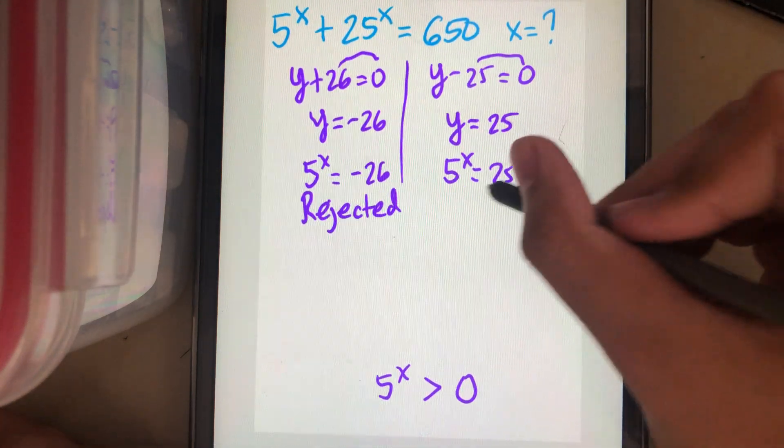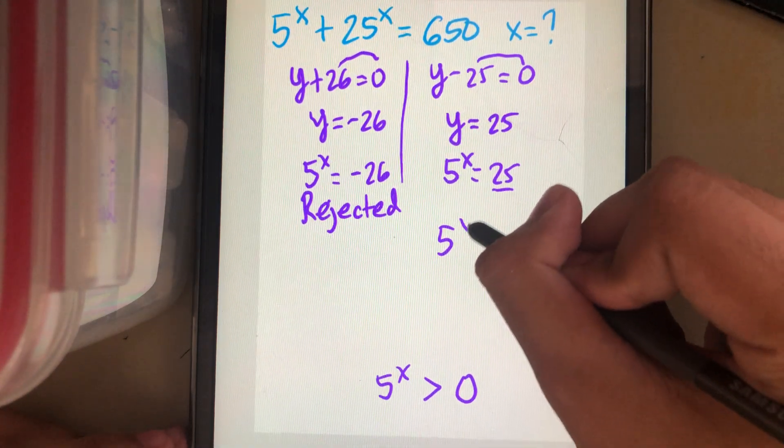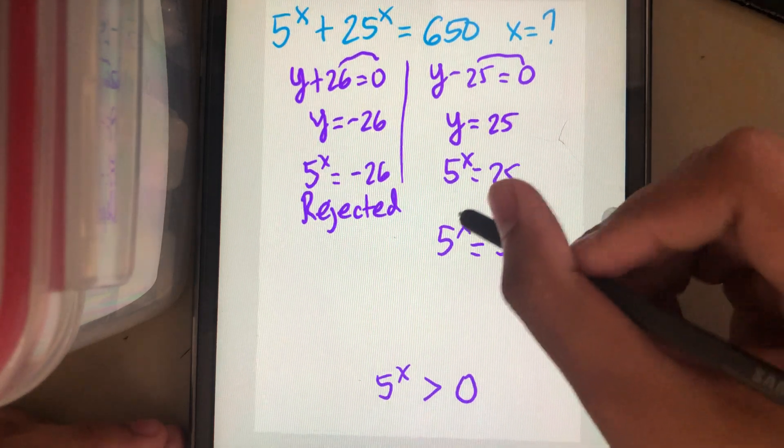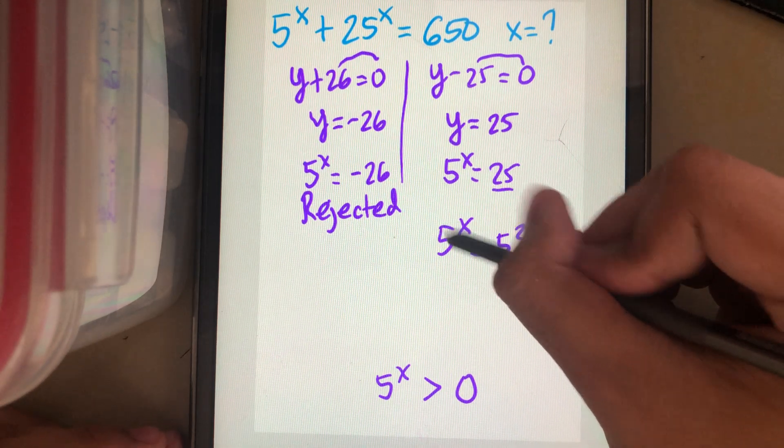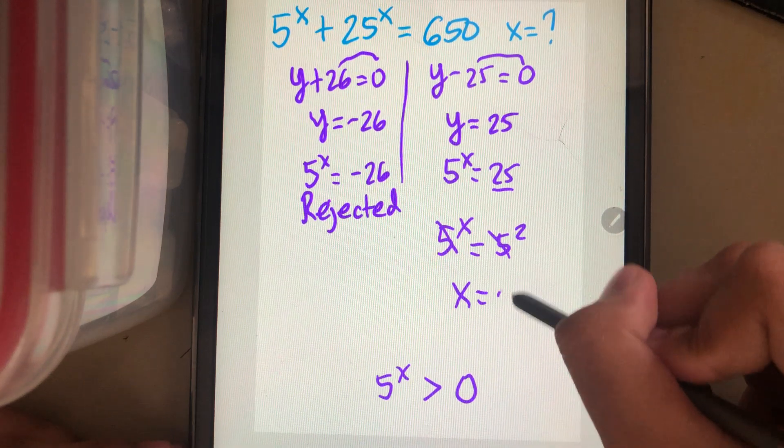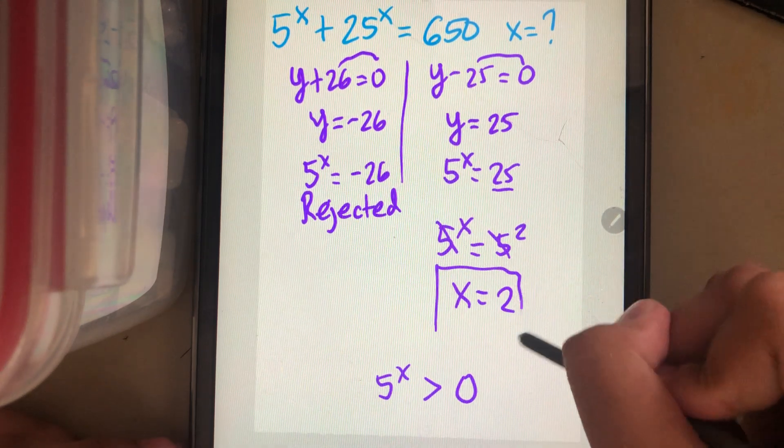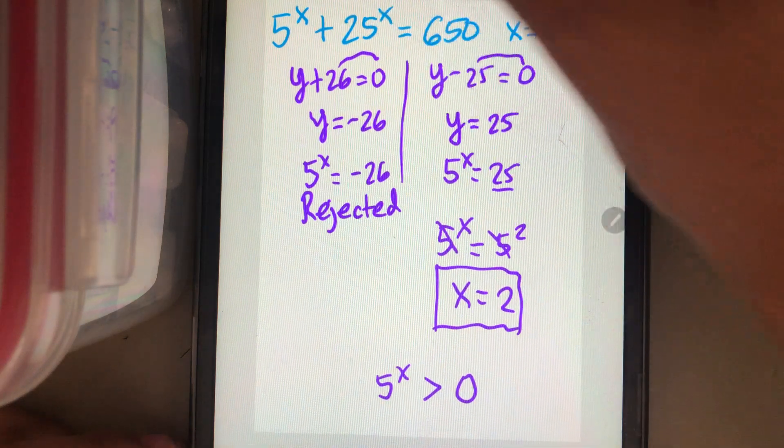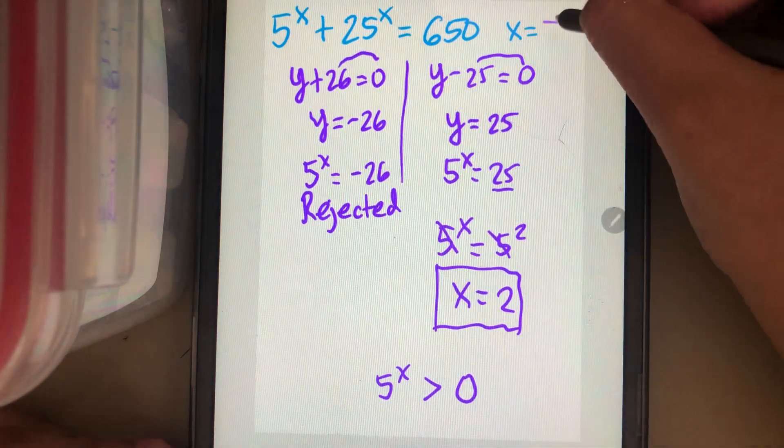25 here can be written as 5 square. And this equation has the same base, so we can remove the 5. And our x is equal to 2. So that is our final answer.